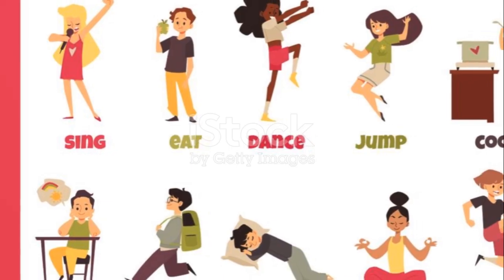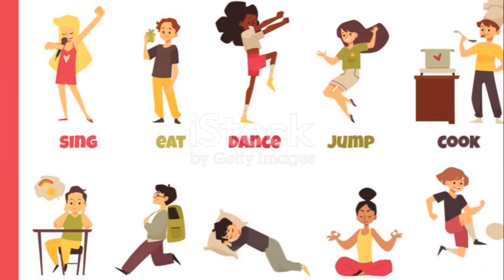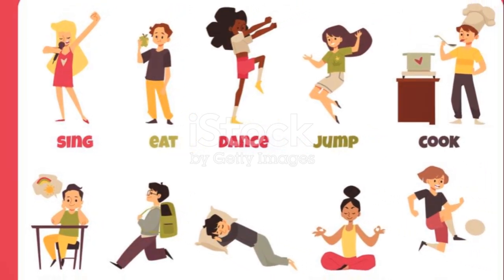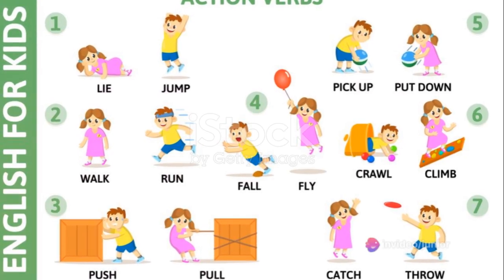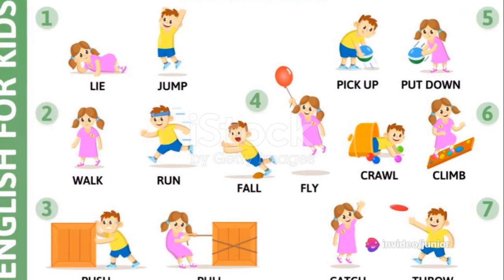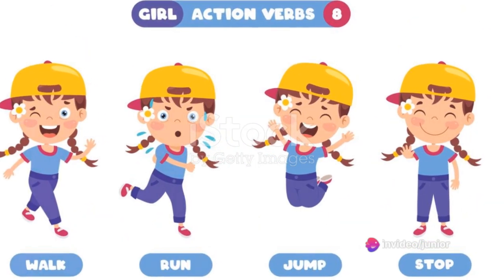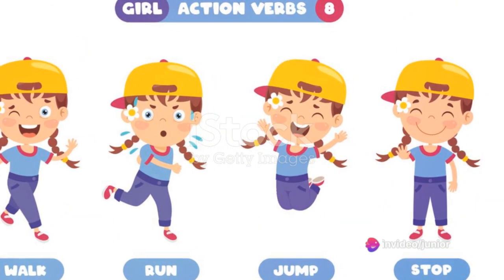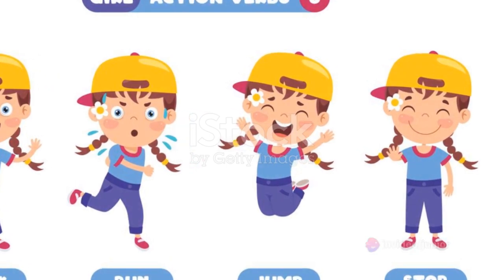There are three types of verbs: action verbs, linking verbs, and helping verbs. Action verbs describe physical or mental actions. Linking verbs connect the subject to a subject complement, such as a noun or adjective.